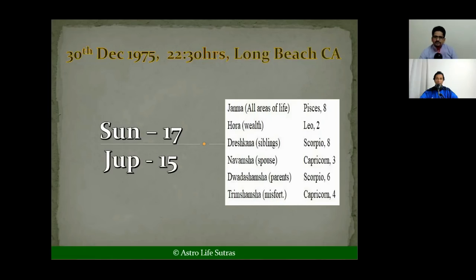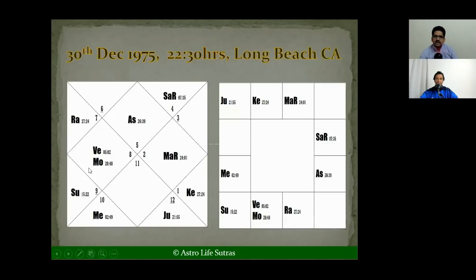Because Sun owns the Lagna in this chart and Lagnesh is getting a good Vimshopak Bala, the Sun is quite strong — which is a good sign for the Lagna of the native, for good health and other things. Sun is quite beneficial, and the same analysis applies for Jupiter as well.